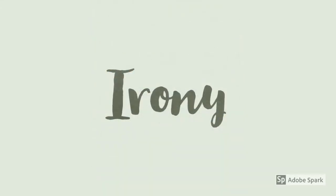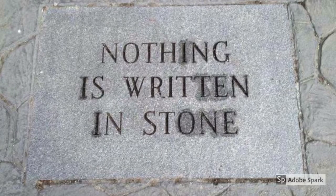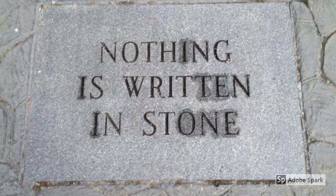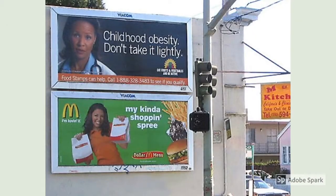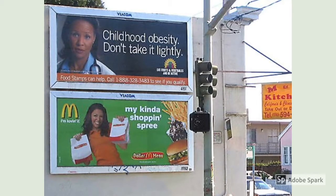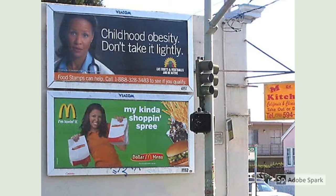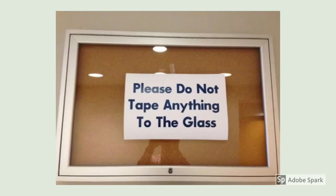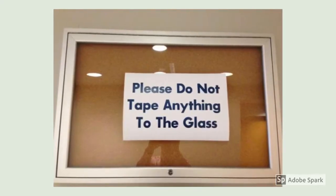Irony is a type of figurative language that a lot of people get confused with coincidentally. However, irony does not mean coincidentally. It actually means when something seems to oppose what it's actually saying. Nothing is written in stone is one example. Here's another example where one sign is talking about childhood obesity while the other one is supporting unhealthy eating choices. And here's another irony example — please do not tape anything on the glass, yet there is a piece of paper taped on the glass to convey this message.